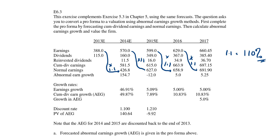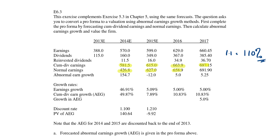After having these numbers, you can calculate your abnormal earnings growth. That is by deducting your cum-dividend earnings from your normal earnings — cum-dividend earnings minus normal earnings. This gives you the abnormal earnings growth.